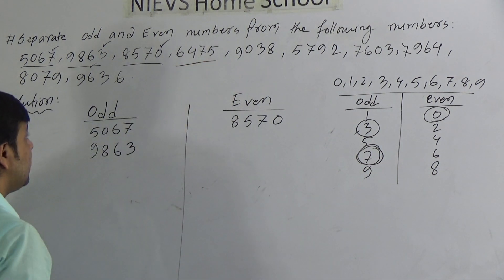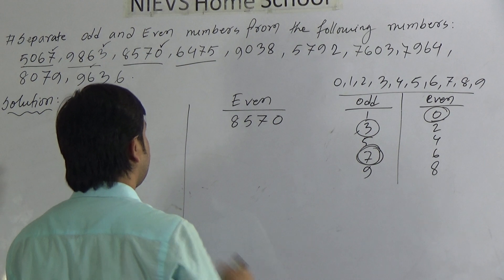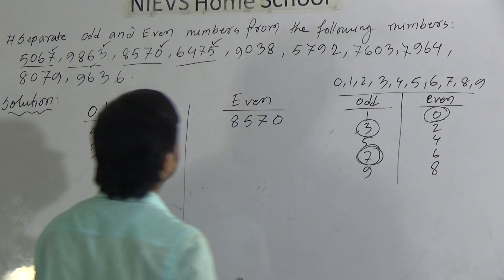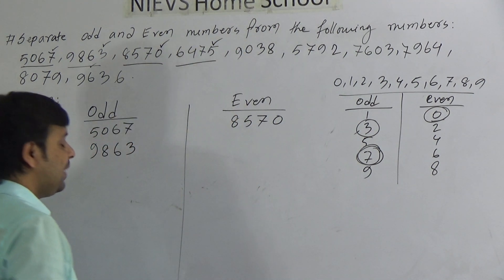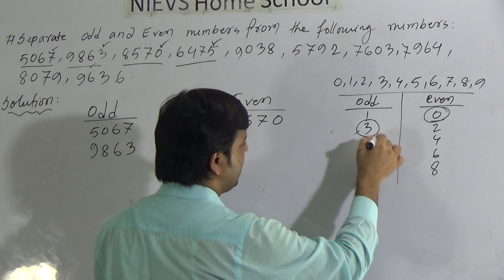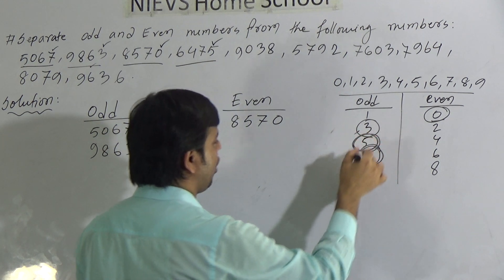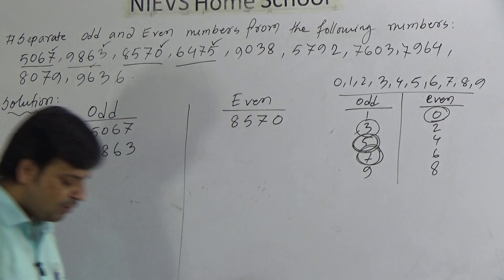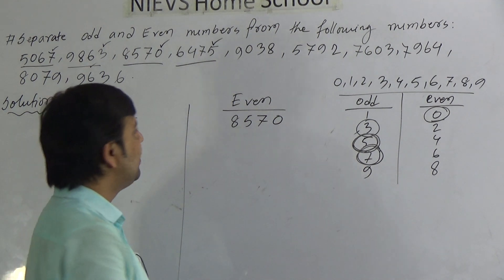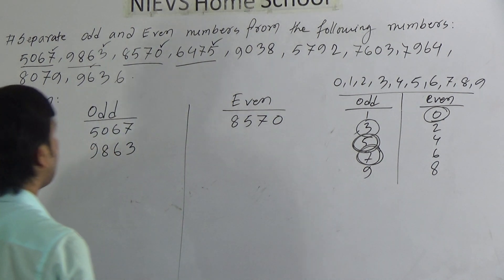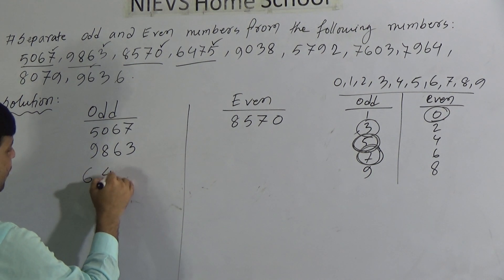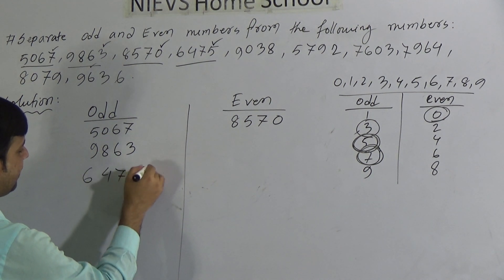Now go to the next number: 6475. Here 5 is in the unit place. And we know the number 5 is in odd — 5 is odd. So the number containing 5 in the unit place is also odd. We write 6475 under odd.